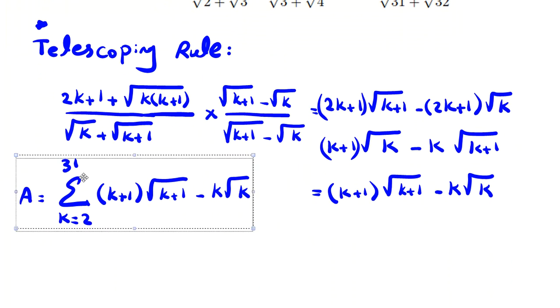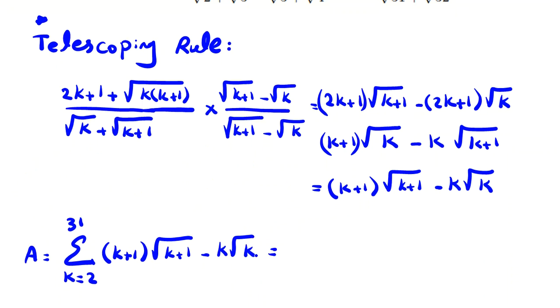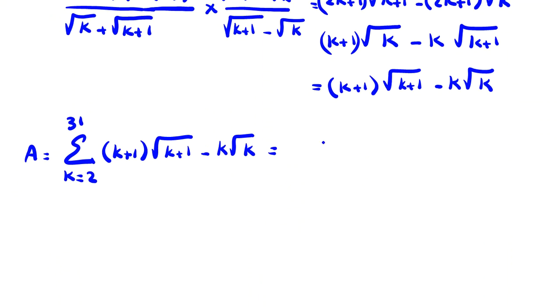Now, okay, so here you say what? If I replace k with two, it will be three root three minus two root two. If I replace k with two, k with three, k with four, it will be five root five minus four root four.